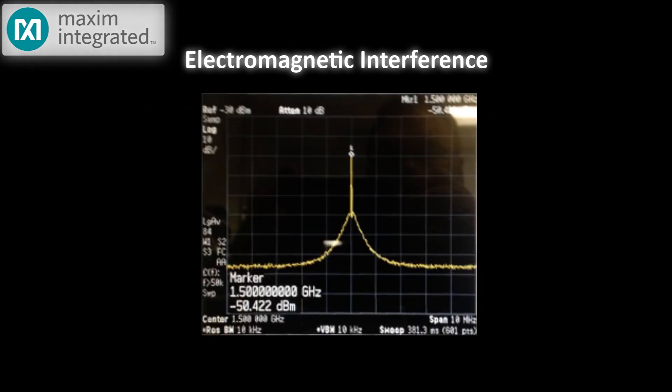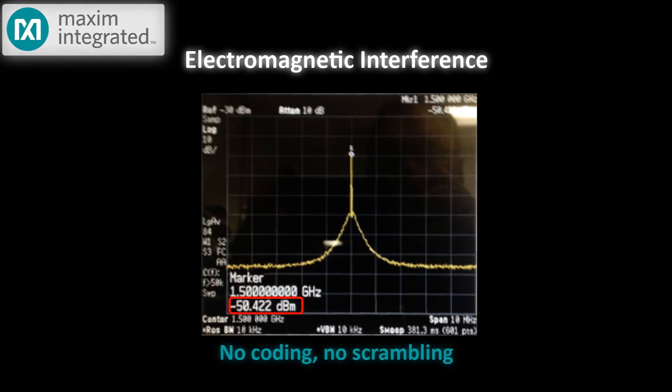Here's what the spectrum looked like with no coding and no scrambling. Notice the level of the peak, minus 50 dBm at one-half the bitrate, or 1.5 GHz.